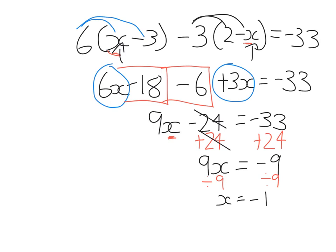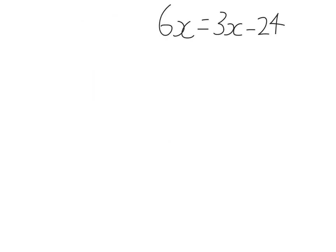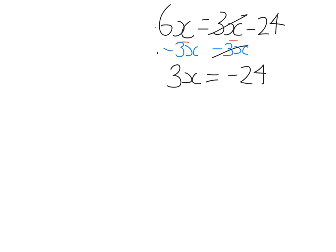Now let's look at what happens when you have the pronumeral on both sides of the equation. When x is on both sides, we need to get it to one spot. What you do is subtract the pronumeral with the lowest coefficient — coefficient meaning the number in front of x. So I subtract 3x from both sides: 6x minus 3x gives 3x, and 3x minus 3x cancels, getting rid of x on one side. Now x is in only one spot. Divide each side by three and we get x equals minus eight.